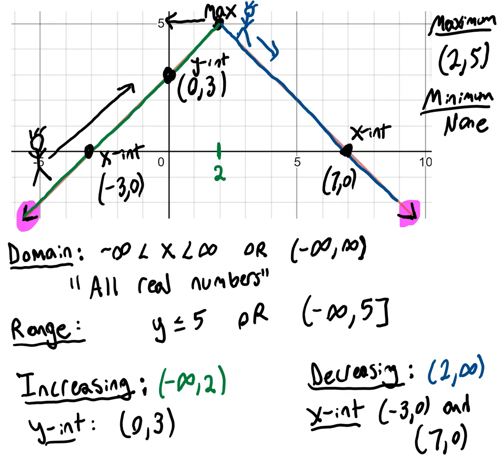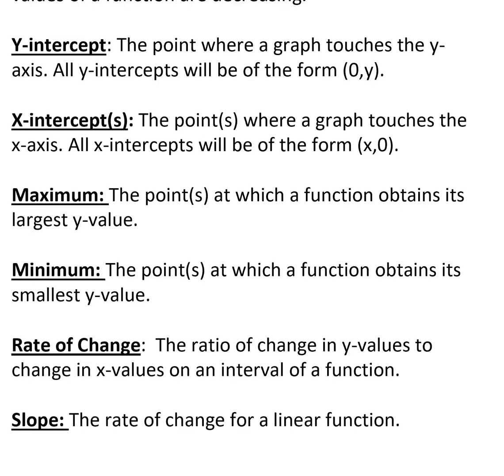Then we have rate of change. The rate of change is the ratio of change in y values to change in x values on an interval of a function. Slope is specifically the rate of change for a linear function, and it's constant throughout for a linear function. Let's talk about rate of change because we're not dealing with a linear function, we're dealing with an absolute value function. We want to do the ratio of change in y values to change in x values.